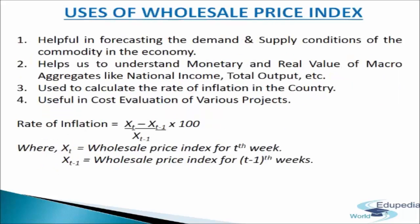The utility or uses of the Wholesale Price Index number will become clear from the following points. First, the index number is helpful in forecasting the demand and supply conditions of commodities in the economy. If there is an increase in the Wholesale Price Index, it means the demand for commodities is more than their supply. On the other hand, a decrease in the Wholesale Price Index shows a situation of excess supply or low demand for goods.